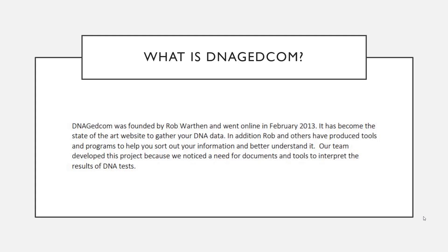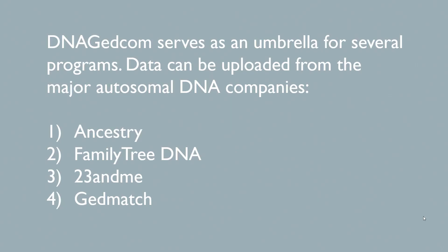DNAGEDCOM was founded by Rob Worthen and went online in February 2013. It has become the state-of-the-art website to gather your DNA data. Rob and others have produced tools and programs to help you sort out your information and better understand it. The team originally developed these tools in association with many users trying to identify biological parents. It became the go-to site for adoptees trying to make sense of their DNA results.